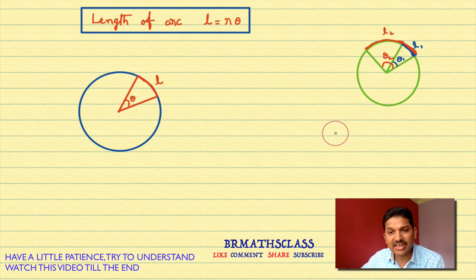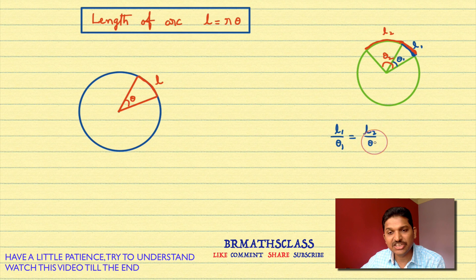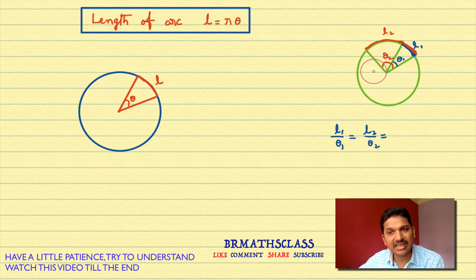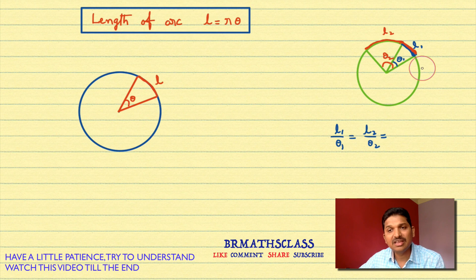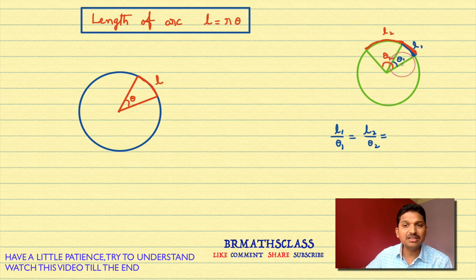You can write it like this: L1 divided by theta1 equal to L2 divided by theta2. Similarly, you can take one more length of arc L3, where L3 is proportional to theta3. The important point is that the length of arc and the angles subtended by it at the center are proportional to each other.